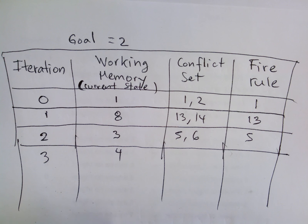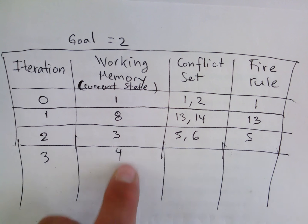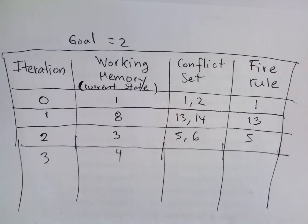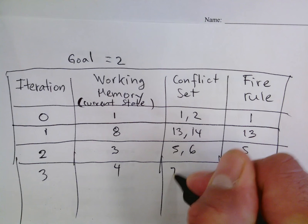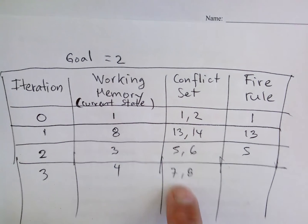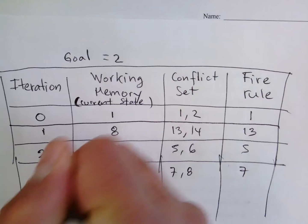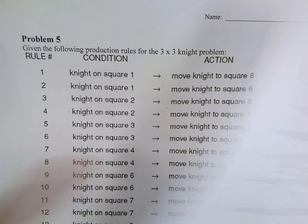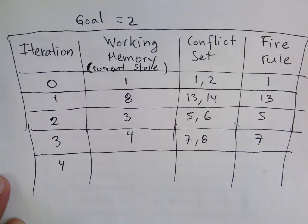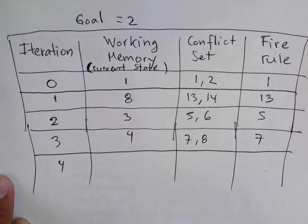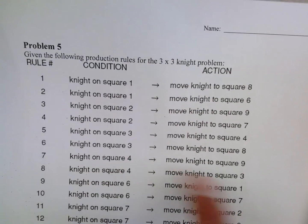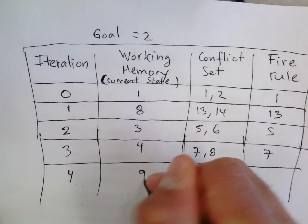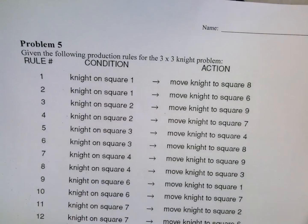The goal is square two and we're still not there, so the game continues. Square four matches rules 7 and 8. We select rule 7 and execute it, which moves the knight to square nine.